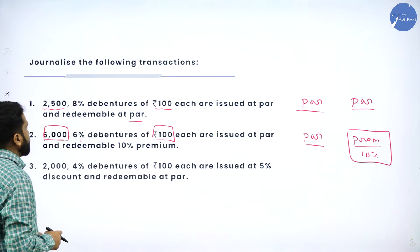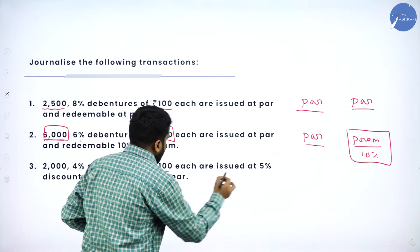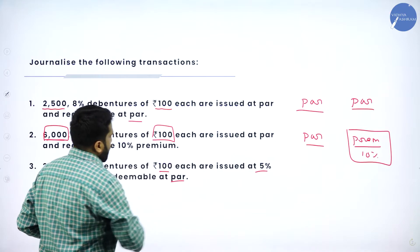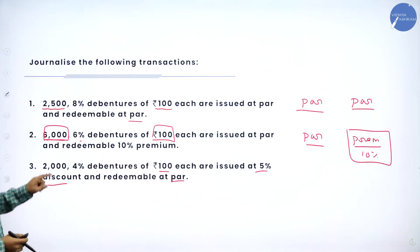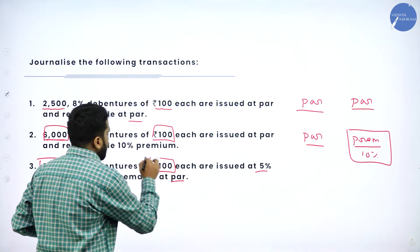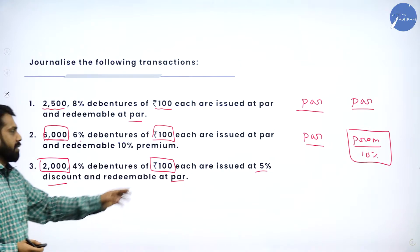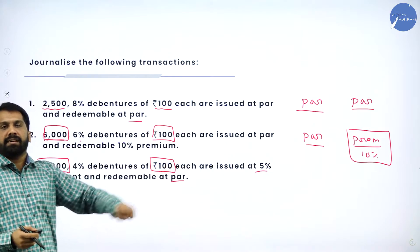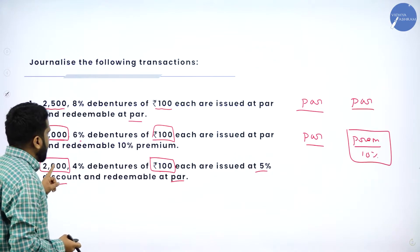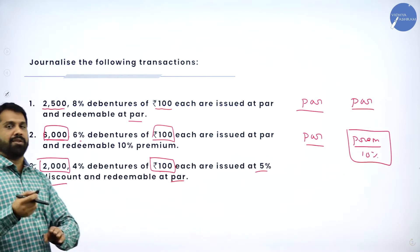Third statement: 2,000 debentures of rupees 100 each, issued at 5% discount, redeemable at par. The first thing to do is multiply the number of shares by the value of share: 2,000 into 100 gives 2 lakh. Later you calculate whether it is a premium or discount, but always first multiply number of shares with value of share.